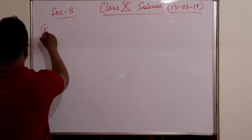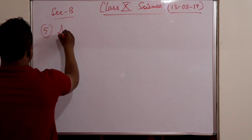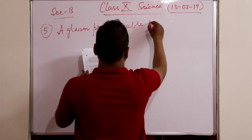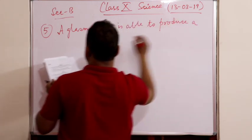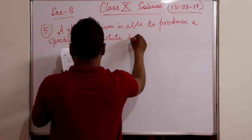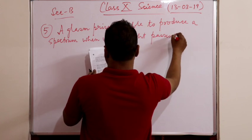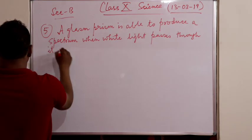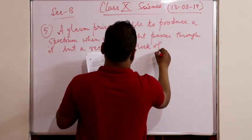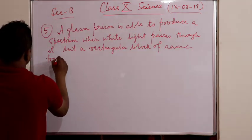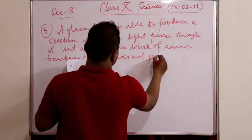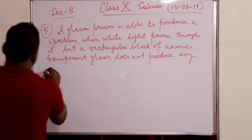Question number five is a question from physics: a glass prism is able to produce a spectrum when white light passes through it, but a rectangular block of the same transparent medium or glass does not produce any spectrum. Why?